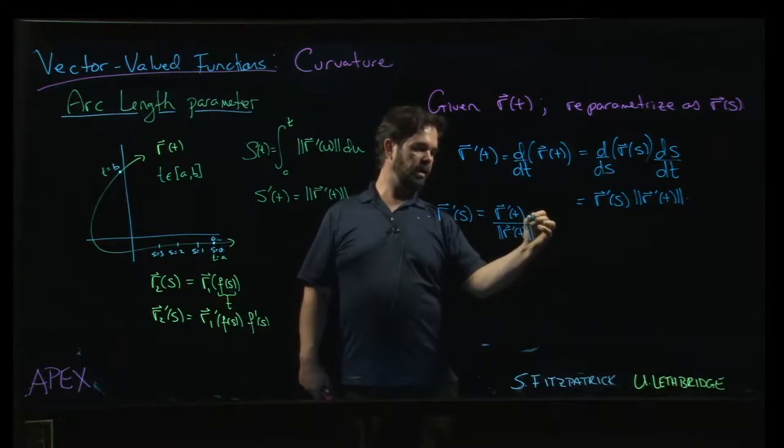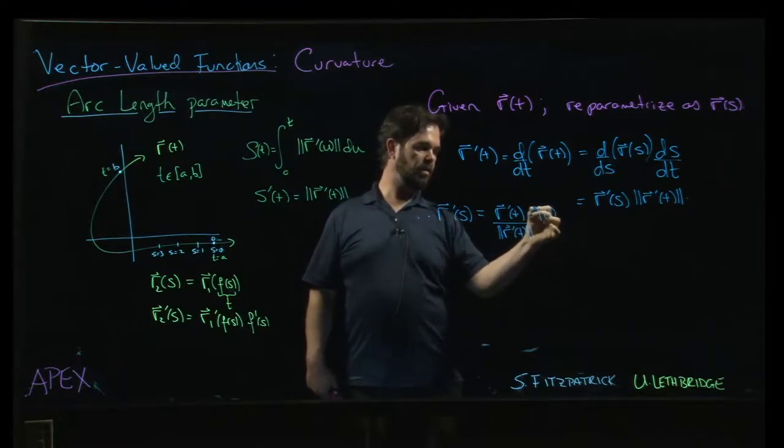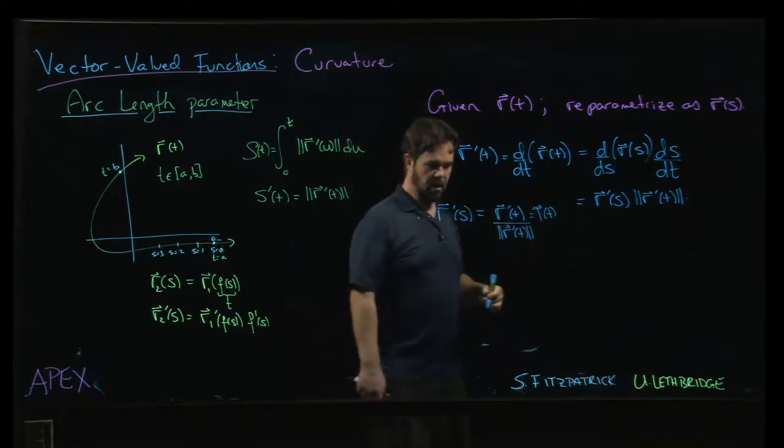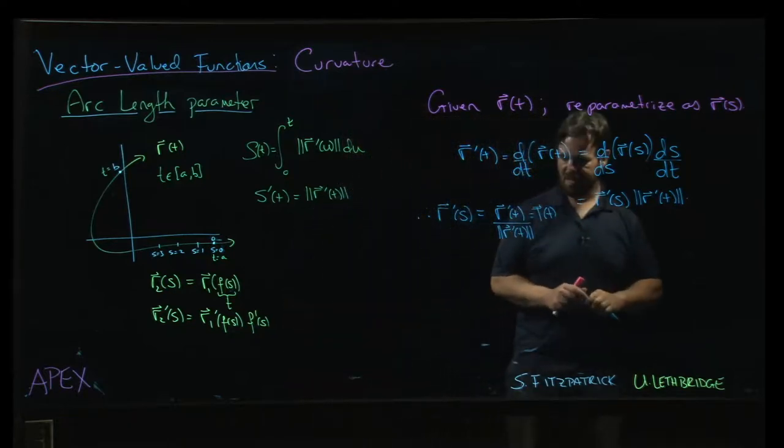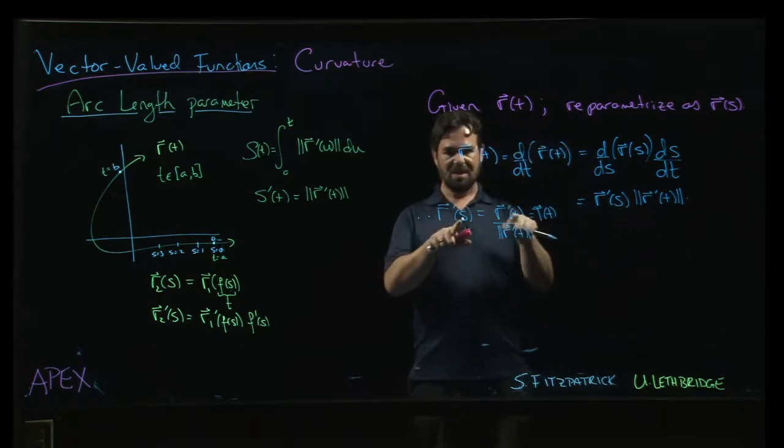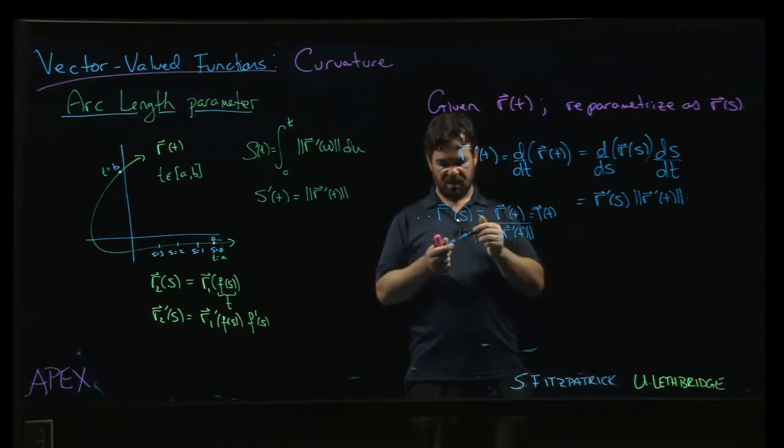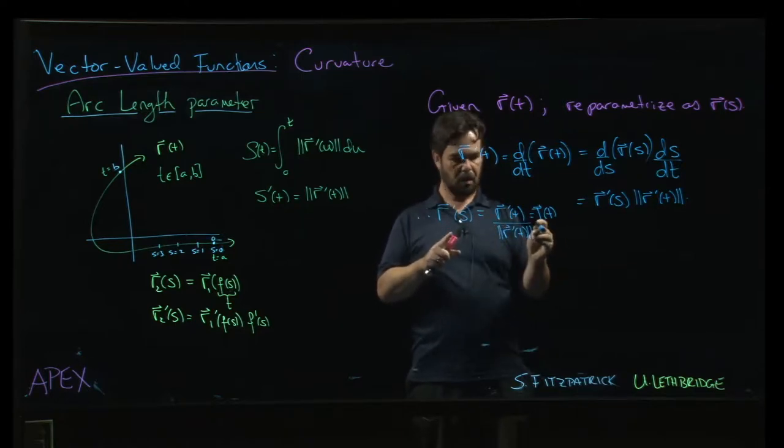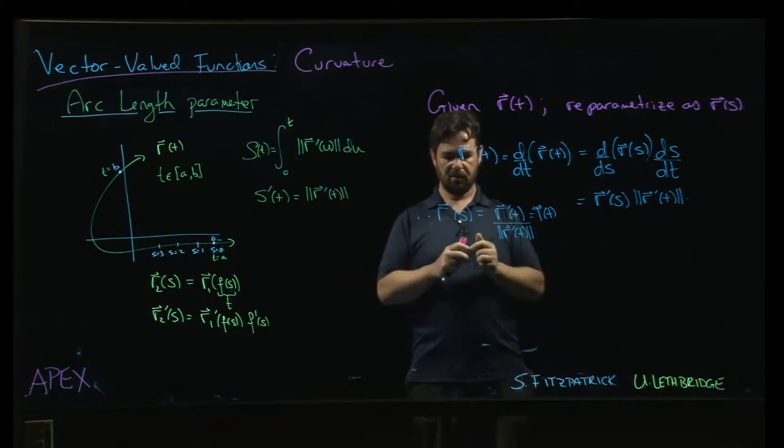And well hey, that's just the unit tangent vector. That's T. Now again, this is one of these slightly confusing things because we're not saying that R prime is the same as T because we have different variables on either side.